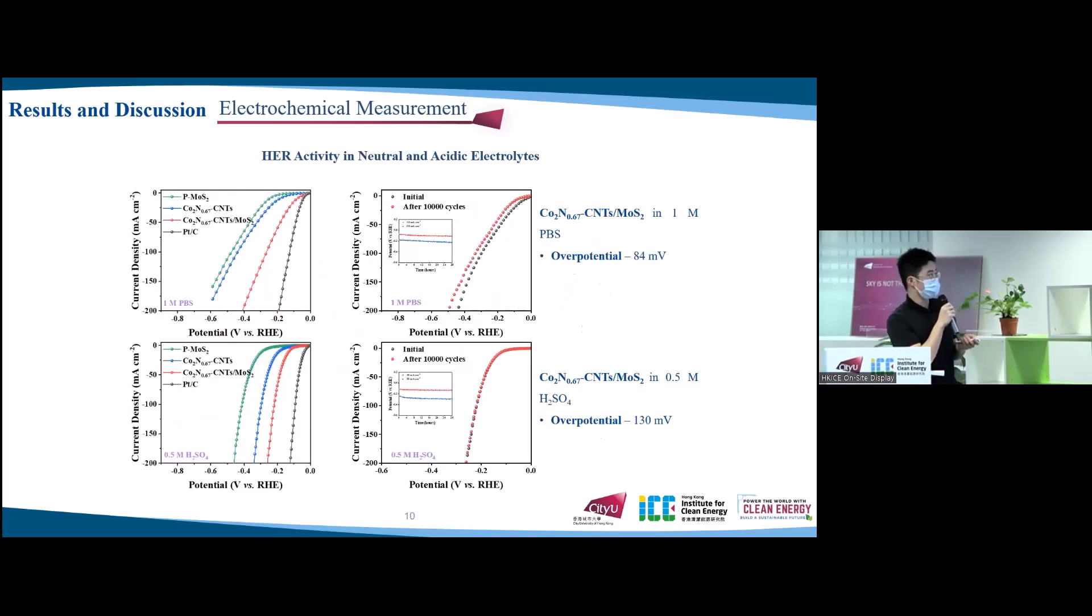The HER activity was also investigated in 1 M PBS and 0.5 M sulfuric acid. The cobalt nitride-CNT at MoS2 also exhibits remarkable catalytic activity and long-term stability.